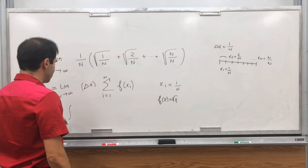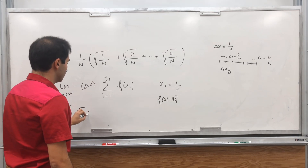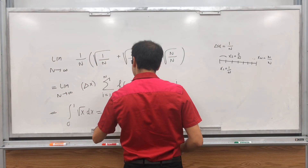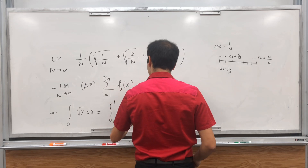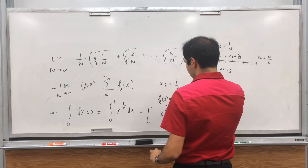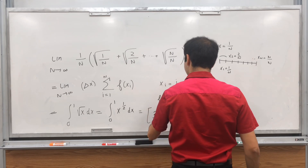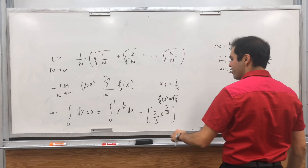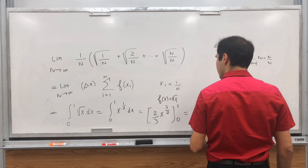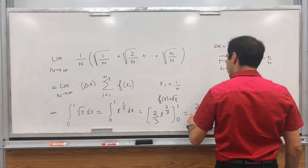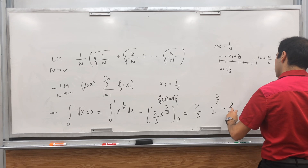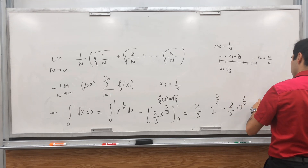So this just becomes the integral from 0 to 1 of √x dx. This is the integral from 0 to 1 of x^(1/2) dx. The antiderivative is (2/3)x^(3/2) — you multiply by 2/3, and you can check that the antiderivative of x^(1/2) is (2/3)x^(3/2). Evaluated from 0 to 1, you get 2/3 times 1^(3/2) minus 2/3 times 0^(3/2), which is just 2/3.